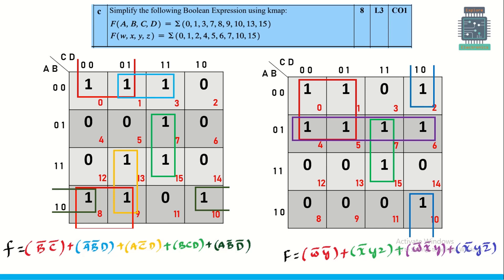The next question asks to simplify two boolean expressions using K-map, for 8 marks — four marks each. I have solved this using the groupings shown. Solve it by yourself as well, and if I made any mistake, please comment below.